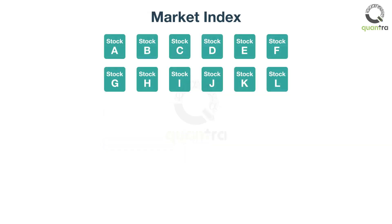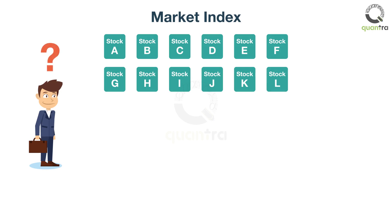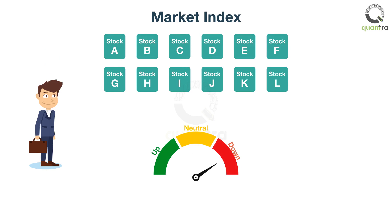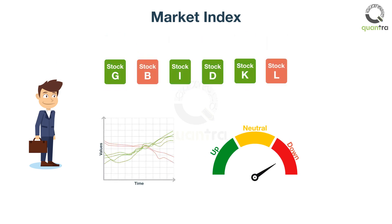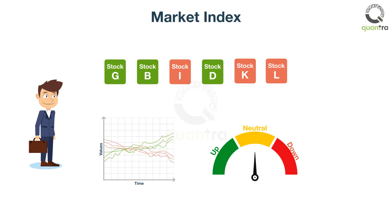On any major stock exchange, thousands of securities get traded on a daily basis. If you are asked to provide a summary on how the market is moving, how would you answer it? It would be clumsy to check each and every stock and figure out if they are up or down. A better approach is to look at some of the major securities — if they are moving up, you would say the market is up; if moving down, the market is down; and if there is a mixed trend, you would say the market is sideways. This is precisely what a market index does. It acts as a barometer for the markets.